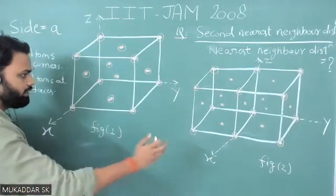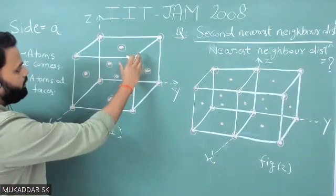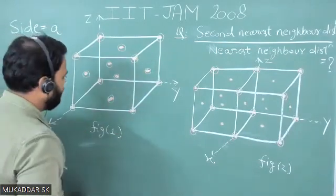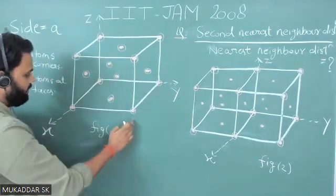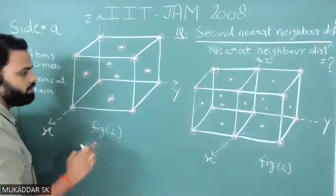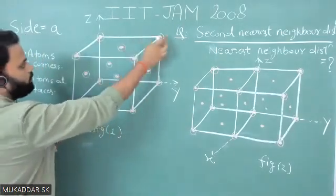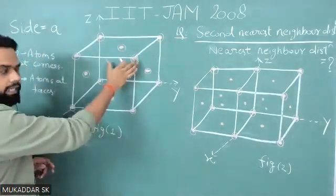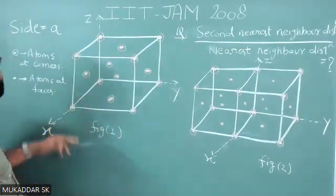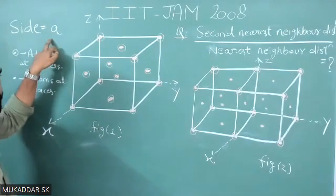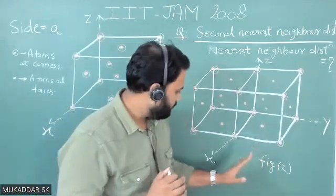I have drawn a diagram of the FCC lattice. In the FCC lattice there are eight atoms at the corners and six atoms on the faces — one, two, three, four, five, six. I have taken the side length equal to a.